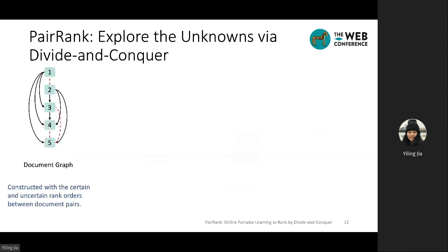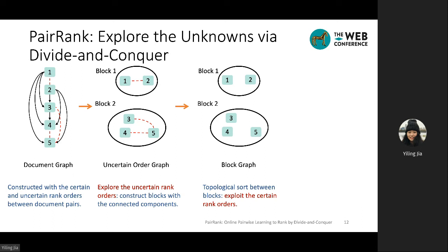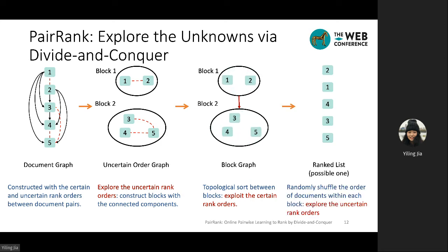Now we present our pairwise exploration model named Pair Rank. First, we construct a document graph with certain and uncertain rank orders between document pairs based on the current ranker. In order to explore uncertain rank orders, we construct blocks, where each block corresponds to connected components in the uncertain rank order graph. As there are no uncertain orders between any blocks, we use a topological sort with respect to certain rank orders to rank the blocks — this is equivalent to exploiting the certain rank orders. Then we perform a random shuffling on the documents within each block to generate the ranked list, which performs exploration of the uncertain rank orders.